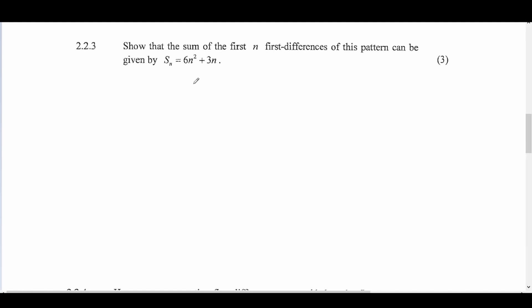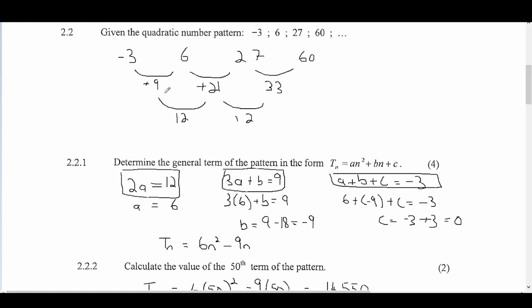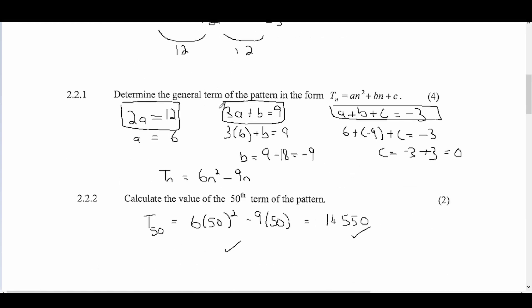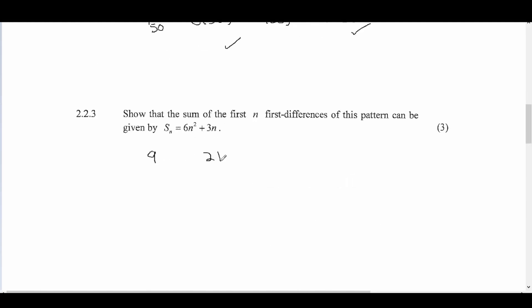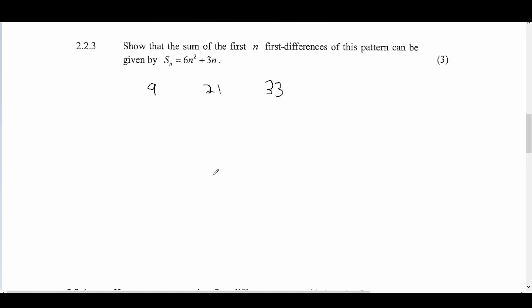Question 2.2.3: show that the sum of the first n first-order differences can be given by S(n) equals 6n squared plus 3n. The first-order differences are 9, 21, and 33. We treat these as an arithmetic sequence and apply the standard arithmetic sum formula.